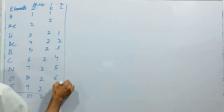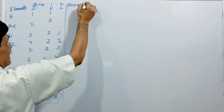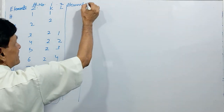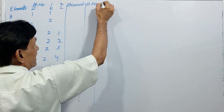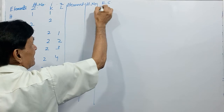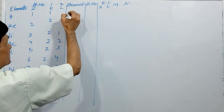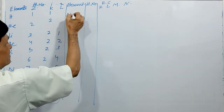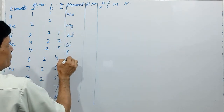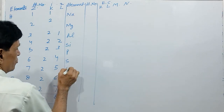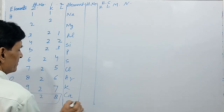Now see another example. The next elements with shells K, L, M, N: sodium (11), magnesium (12), aluminum (13), silicon (14), phosphorus (15), sulfur (16), chlorine (17), argon (18), potassium (19), calcium (20), and scandium (21).